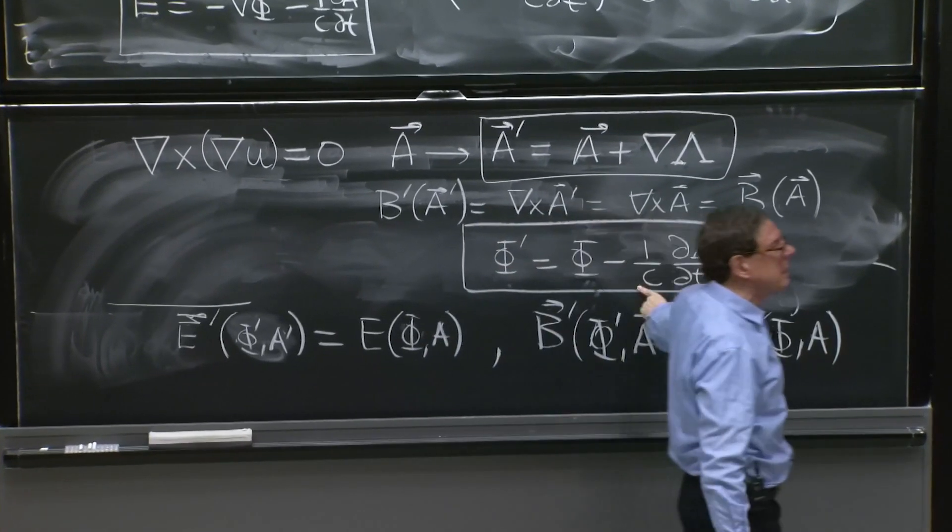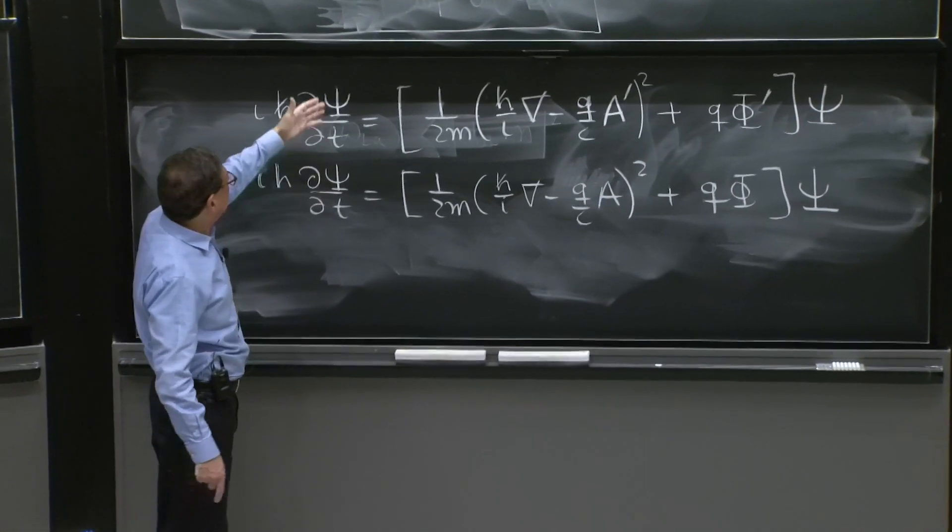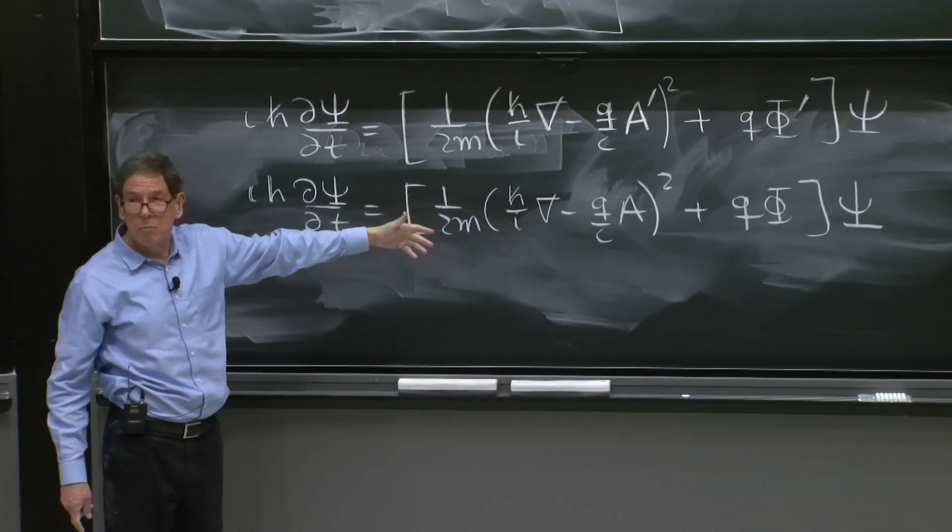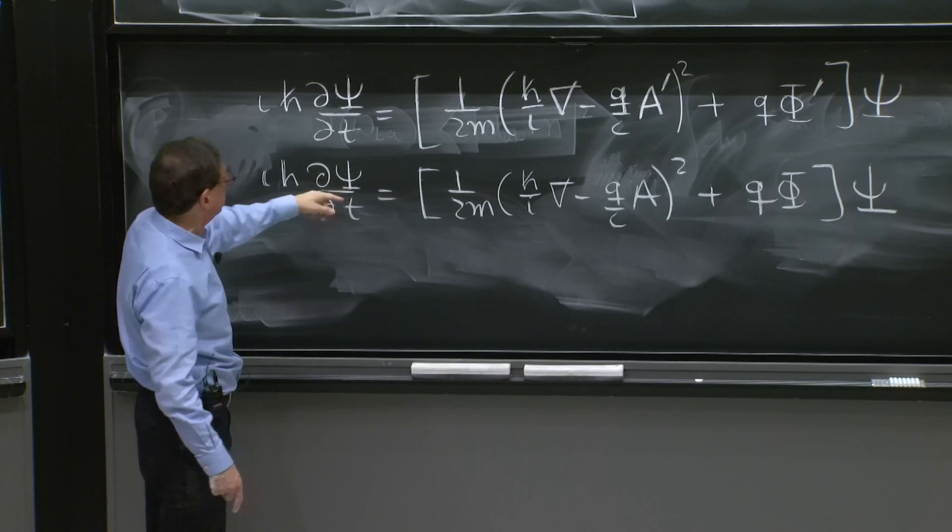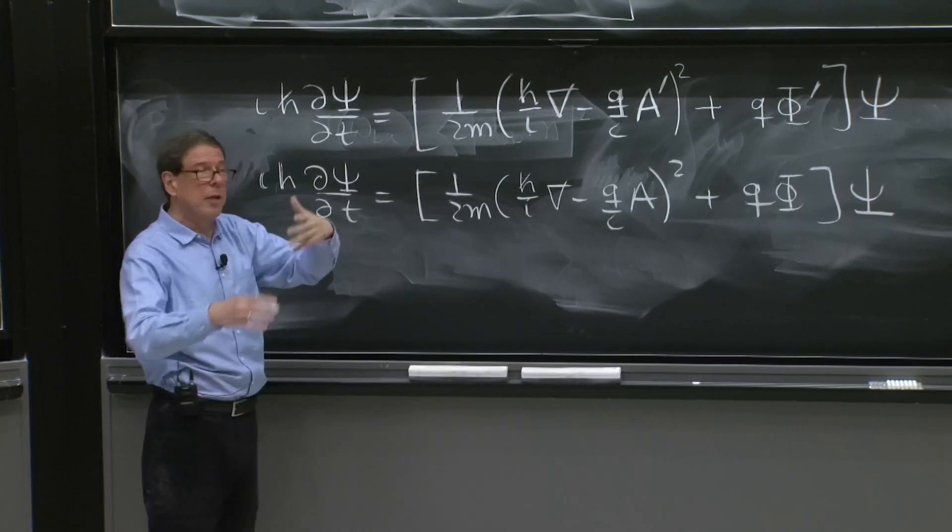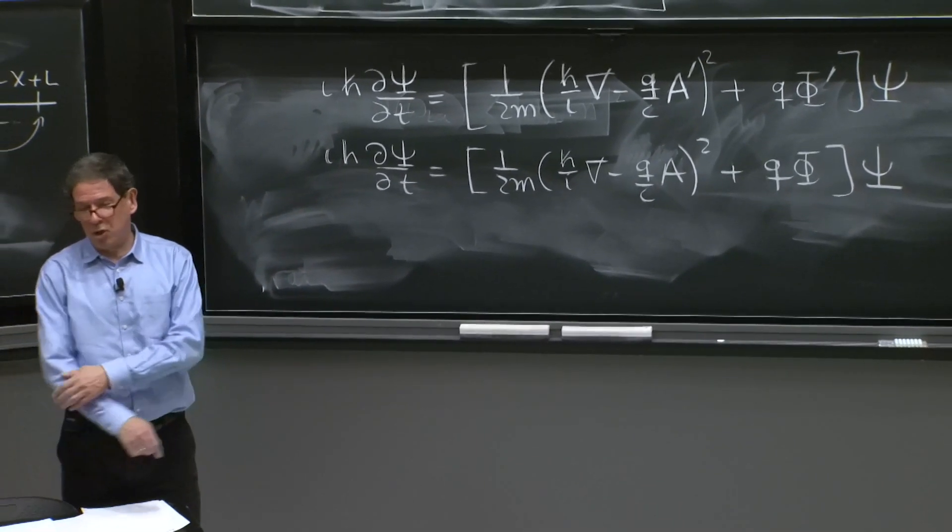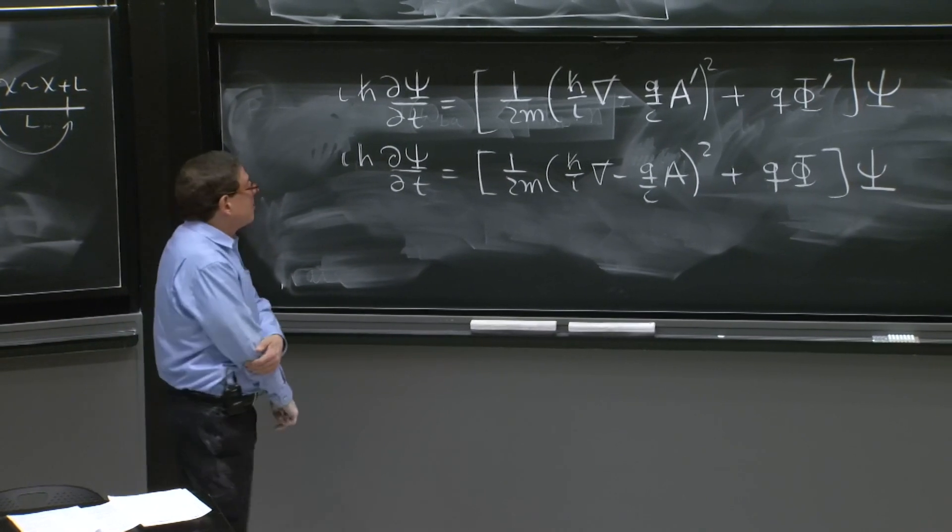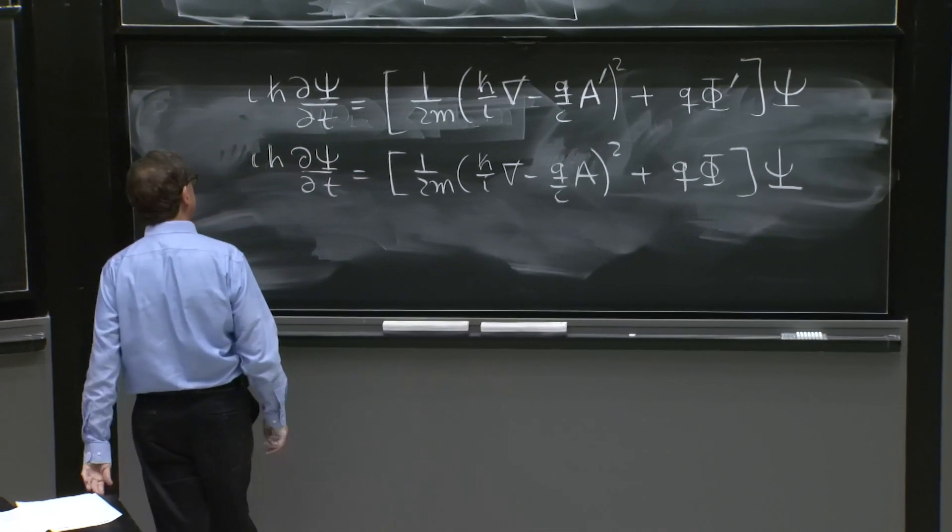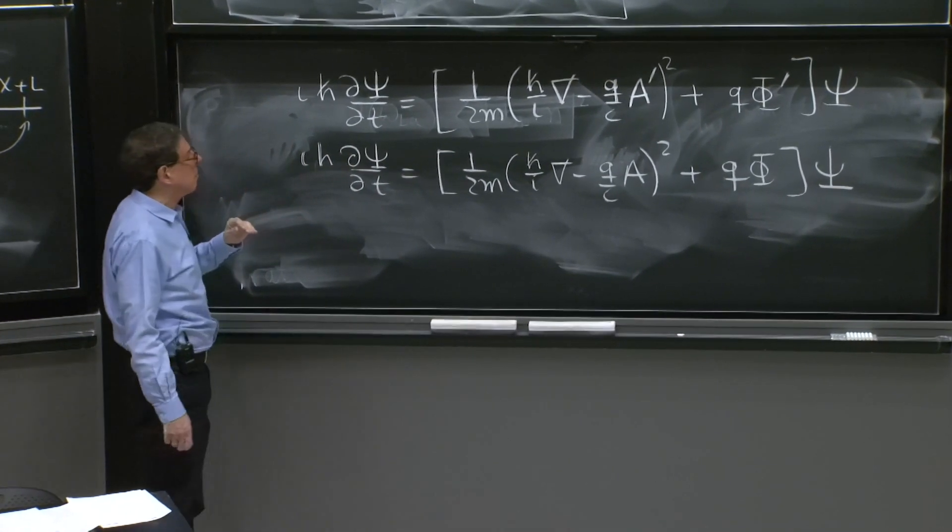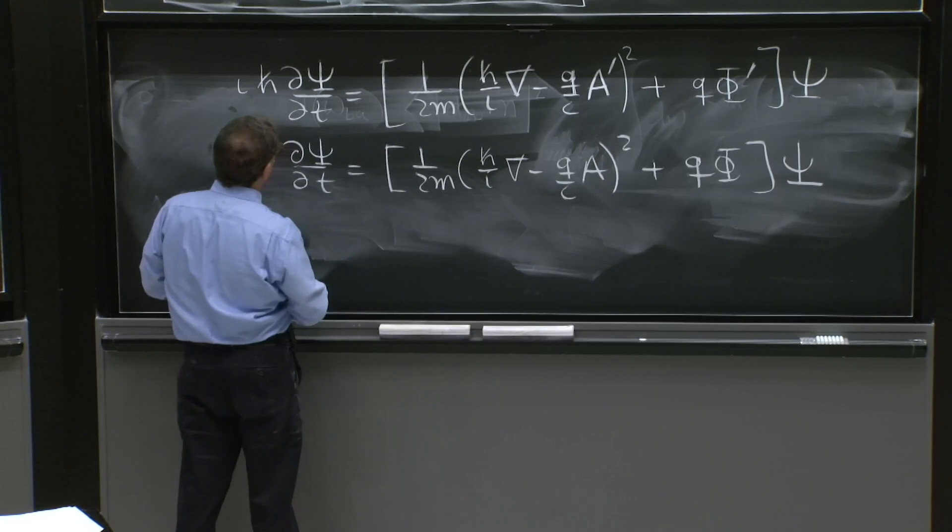Should the same ψ be a solution of both? Should this equation imply this equation so that the same ψ works when you change the gauge potentials? That would not work. That is asking too much. You certainly, if the same ψ worked, would be simple looking. But that's not what you really have to demand.